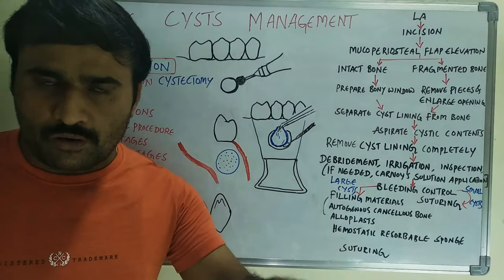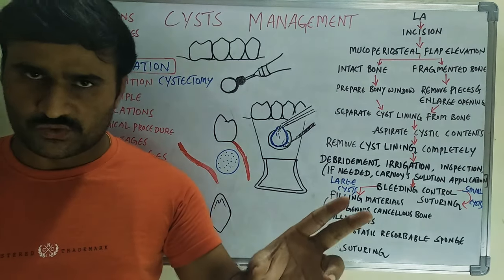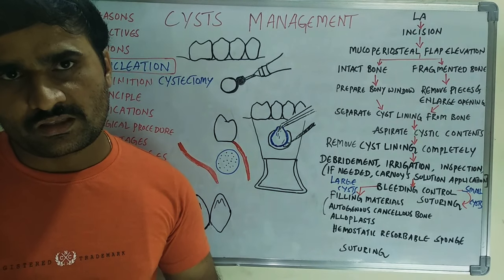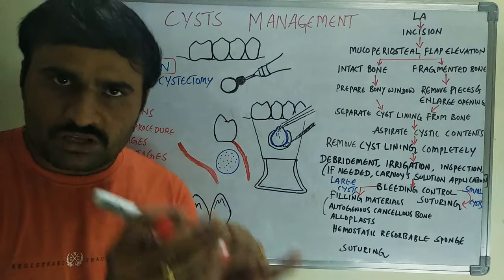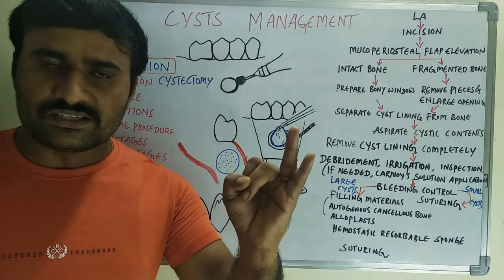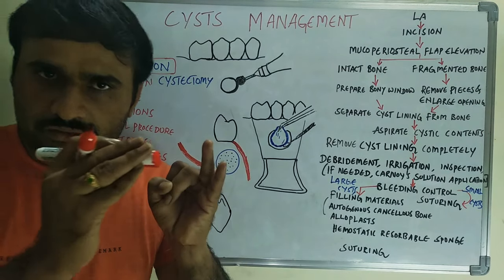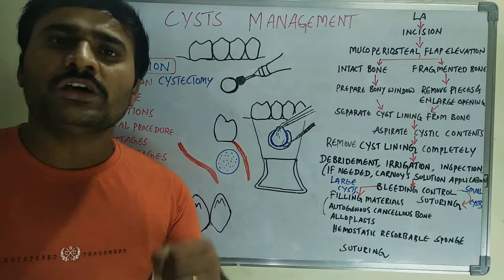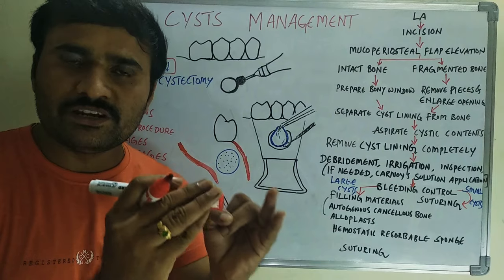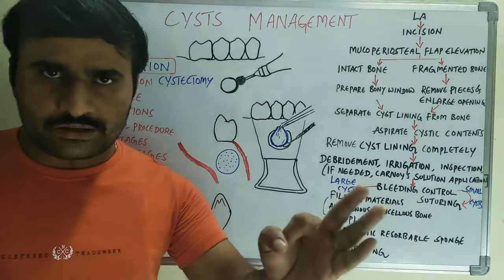The cyst may involve the nasal cavity, leading to nasal obstruction or recurrent rhinitis. These are the problems that is why we are treating the cyst. Coming to the objectives, the first objective is to completely remove the pathological cavity and cyst lining. Where possible we have to completely remove the cyst lining. Second, if teeth are present in the cystic cavity, we should allow eruption of those teeth.